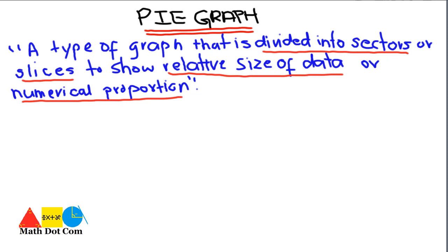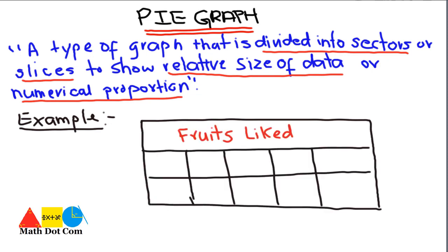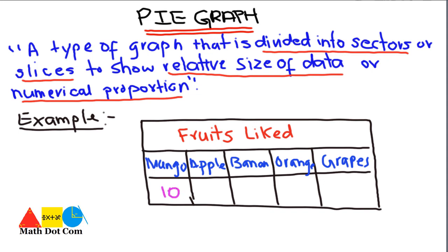We have an example to show its concept. Imagine you have made a survey and you ask people which food they like the most, giving them options like mango, apple, banana, orange, or grapes. Your survey presents you with the following data: 10 people said they like mango, 6 people said they like apple, 4 people said they like banana, 5 people said they like orange, and 3 people said they like grapes.